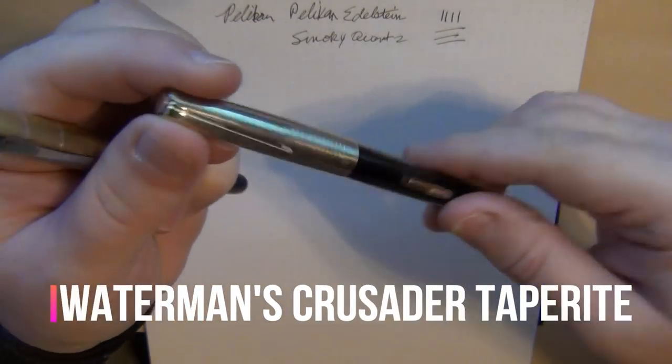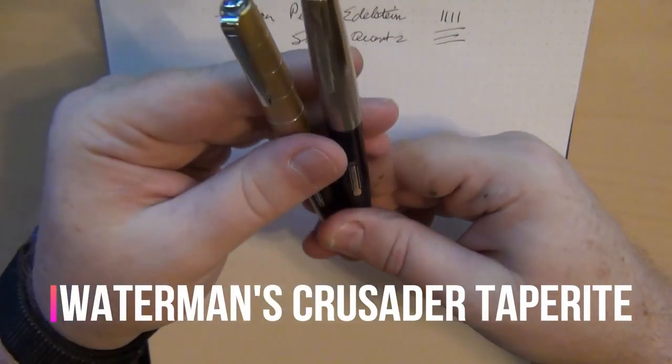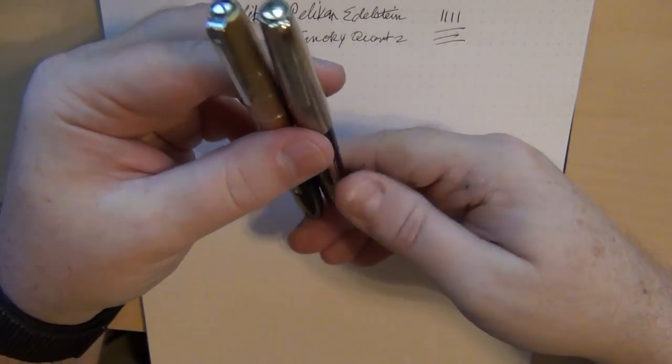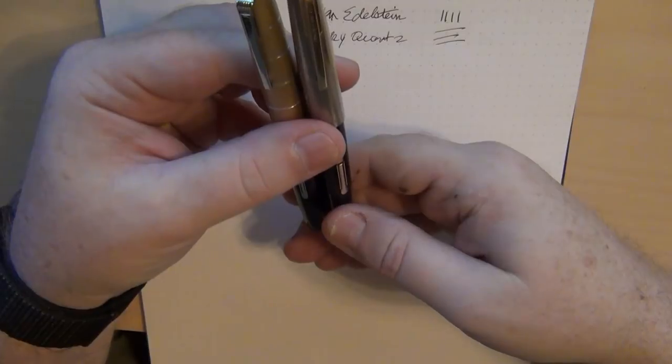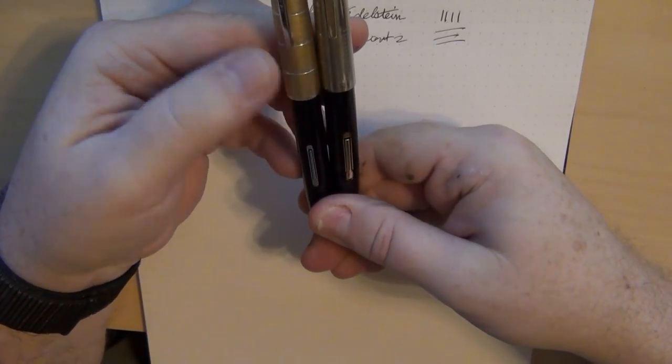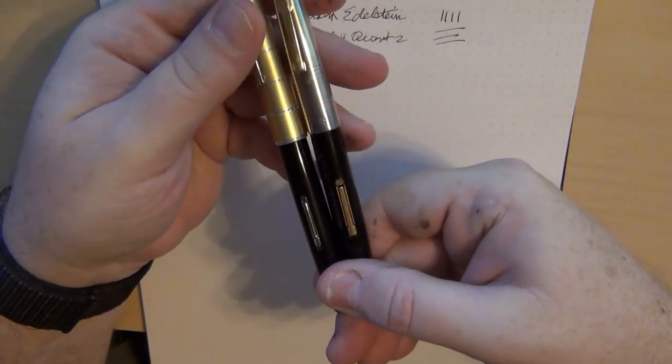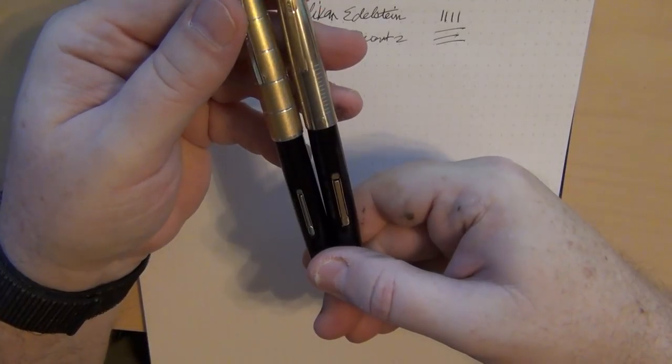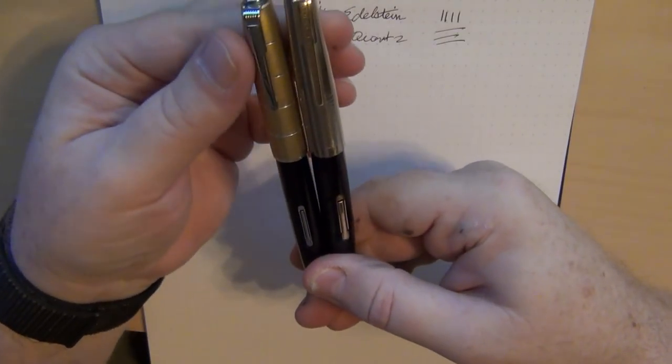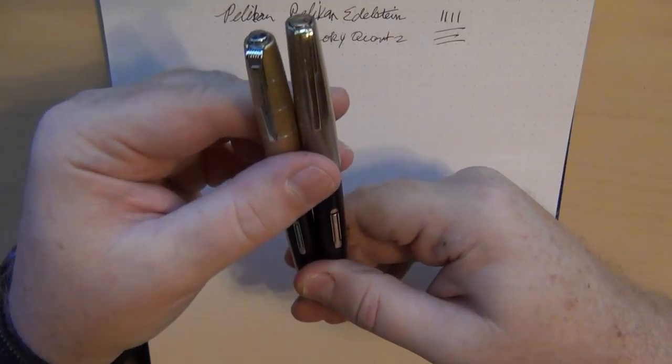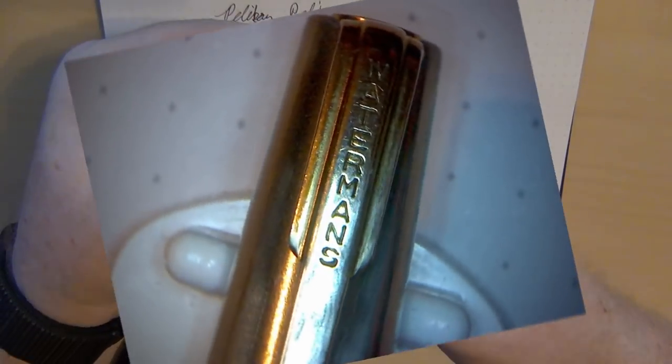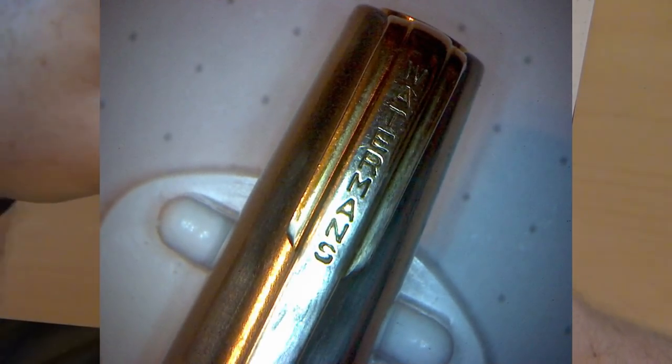But this one is the Crusader Taperite and it is a little bit different. So I mean it's got a few similarities in that it is a lever filler, it's from around the same time, it's got the general same torpedo shape to it, but you can see that there are some differences. The lever box is different, different size, the cap is different, and the length is just a little bit different.